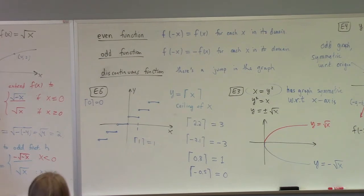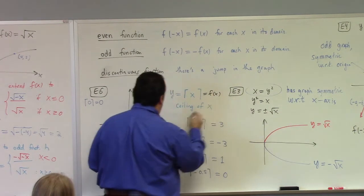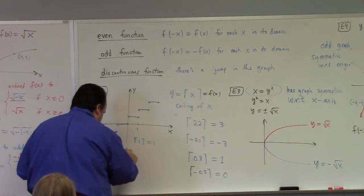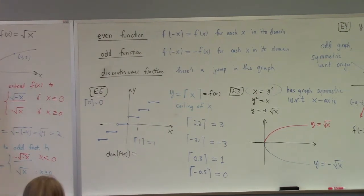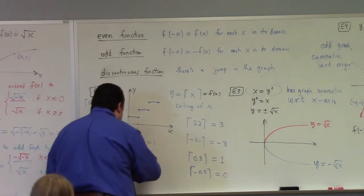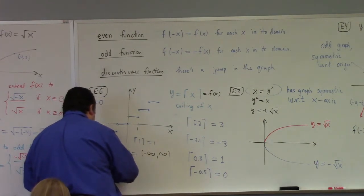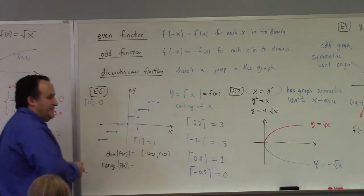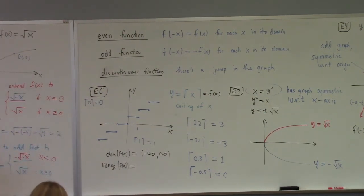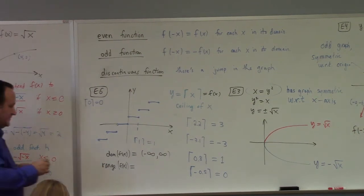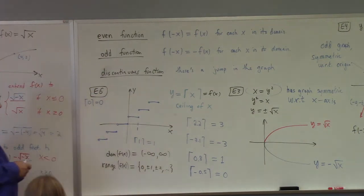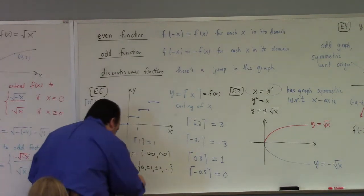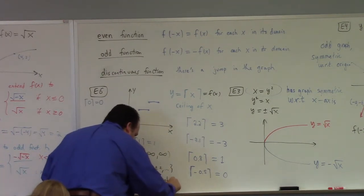If I call this f of x, what's the domain? The domain is everything - negative infinity to infinity - because we can always round up to the next integer; it's defined for any real number. What's the range? The range is zero, plus or minus one, plus or minus two, and so forth - nothing in between those numbers. So the range of f of x is the set of integers, which we denote with the symbol Z.